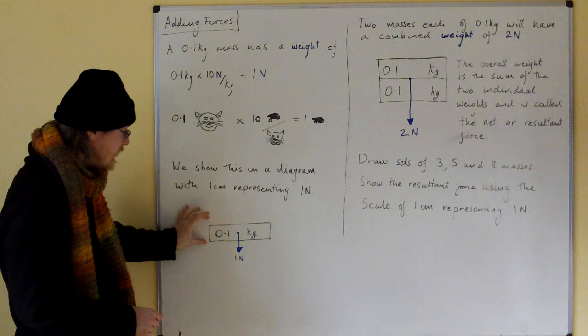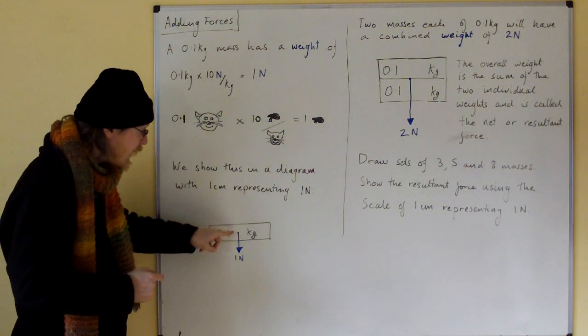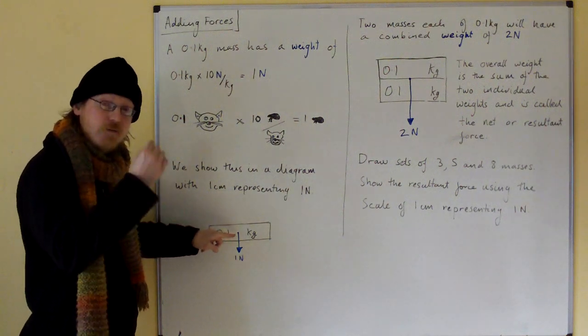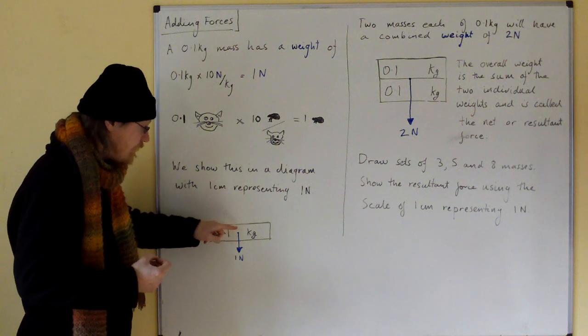So here's our mass, 0.1 kilograms of stuff on the surface of the earth, and we draw the weight from the middle of the middle, from the absolute centre. Not the middle of the top, not the middle of the bottom, but the middle of the middle.